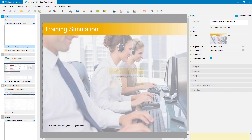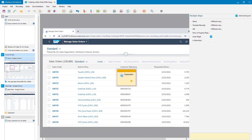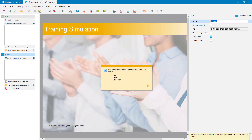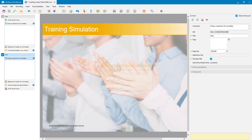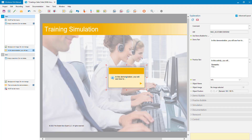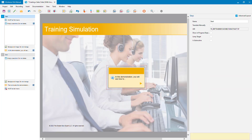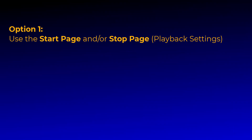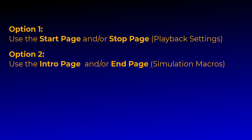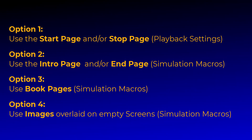To summarize, there are a few different options for adding start and end pages to your simulation. You'd typically put these into an empty simulation project — strip out the content steps, keep just the start, end, and your chosen page structure with boilerplate text, then save it and mark it as a template. Authors can then select it, start recording, and have all of this in place. Your options are: the built-in start/stop page in settings, the intro and end page macros, book pages, or images overlaid on blank screenshots. I hope you found that useful — please subscribe for more videos.